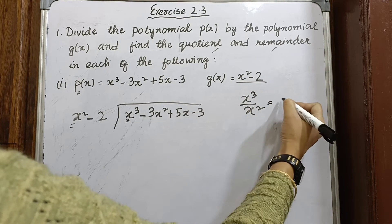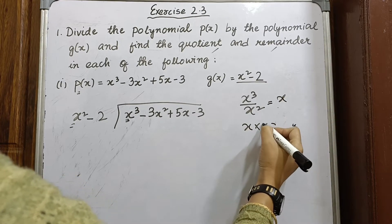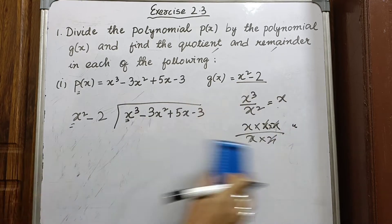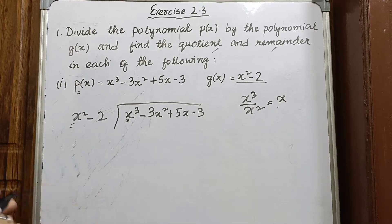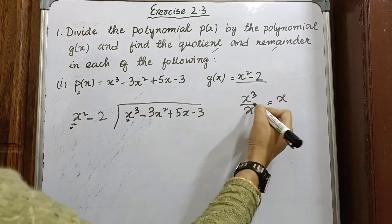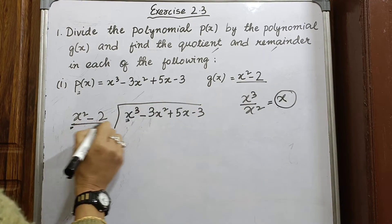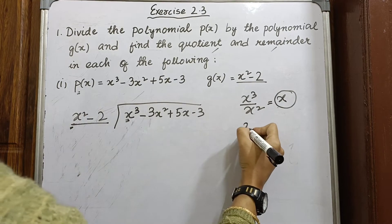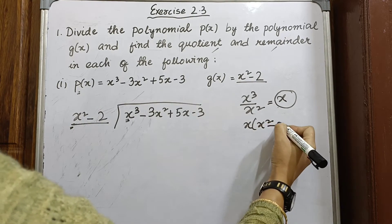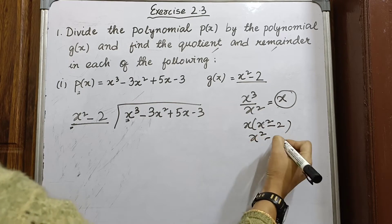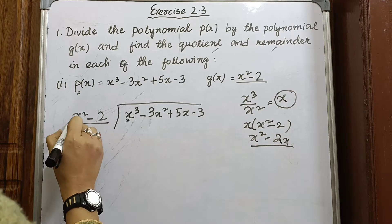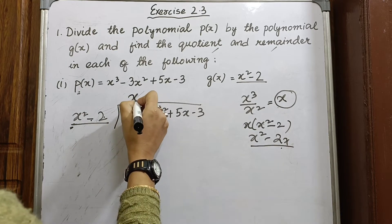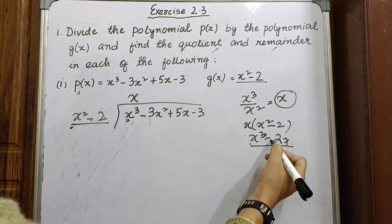What we get is x³ divided by x² equals x, because x·x·x divided by x·x cancels to give x. After dividing x³ by x², you get x. Now we multiply the whole divisor x² minus 2 by x: x² minus 2 into x gives x³ minus 2x.